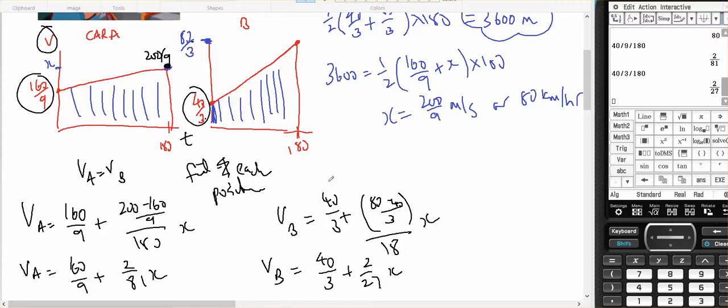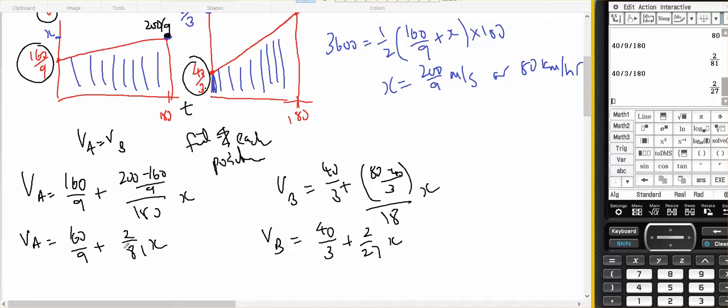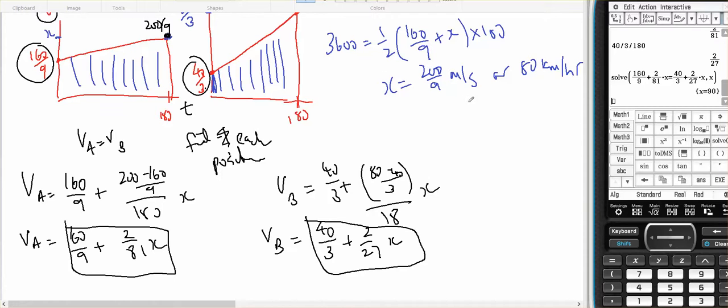Okay, so using my calculator to simplify those gradients. So the acceleration of A is 2 on 81 metres per second, and the acceleration on B is 2 on 27 metres per second. So I want to find the time. The time that they are equal together will be when this equals this, and I'll solve that on the calculator. And my calculator tells me when I set these two velocities together, they have the same velocity at 90 seconds.